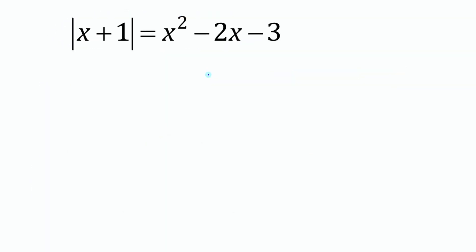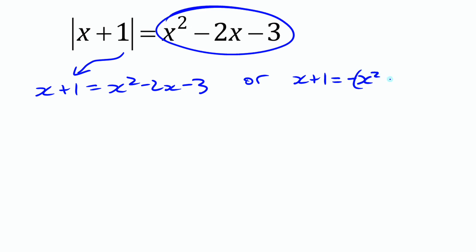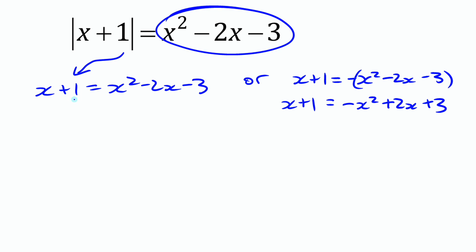Let's try another one, splitting absolute value of x plus 1 equals x squared minus 2x minus 3 into two cases. Either x plus 1 equals x squared minus 2x minus 3, or x plus 1 equals negative (x squared minus 2x minus 3), which expands to negative x squared plus 2x plus 3. These are quadratics, so gather all terms on one side. The first gives x squared minus 3x minus 4 equals 0.